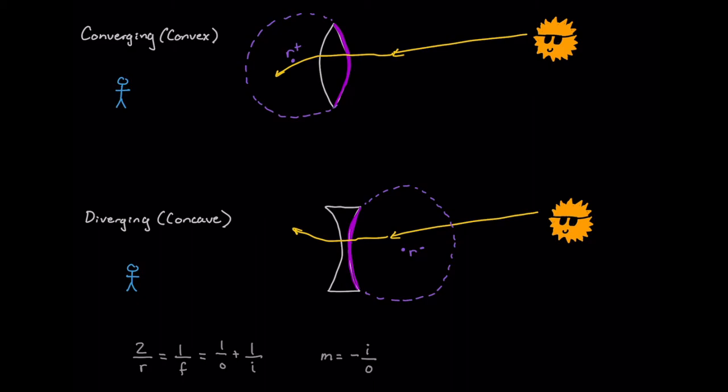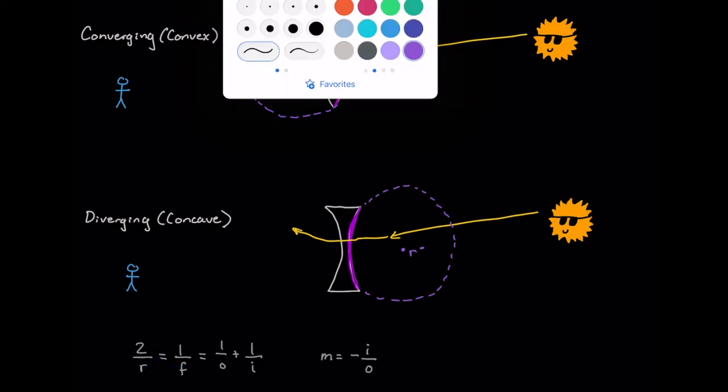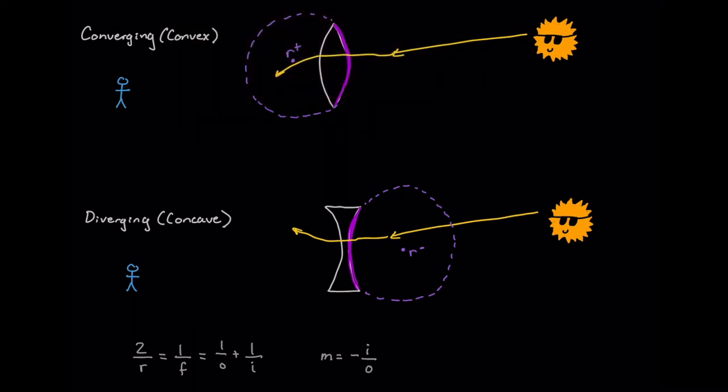And then if we take a look at our lens equation, which I've shown down here, we'll see that if we cross multiply, that f will necessarily have to be half of r's value. So we can go ahead and draw that in, kind of helps us visualize things.